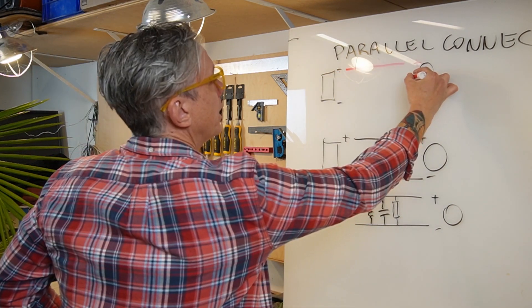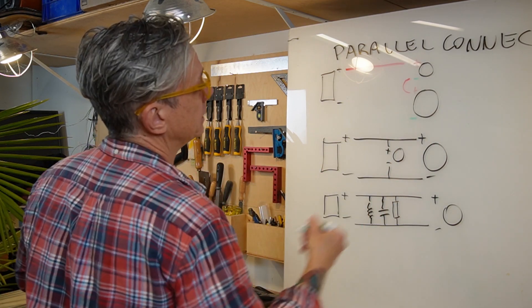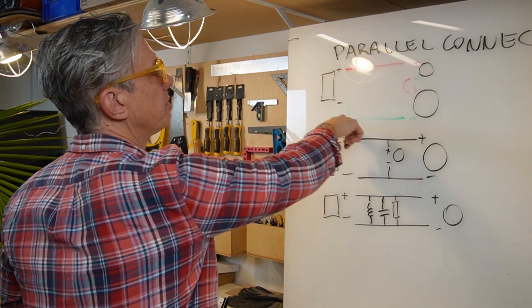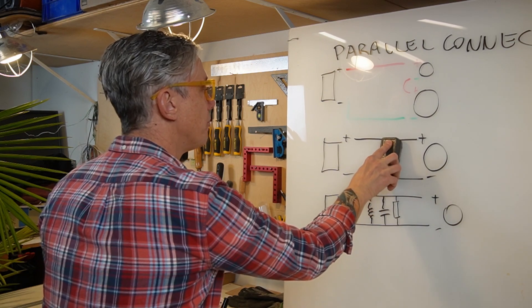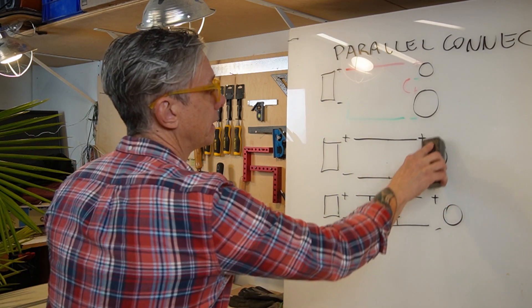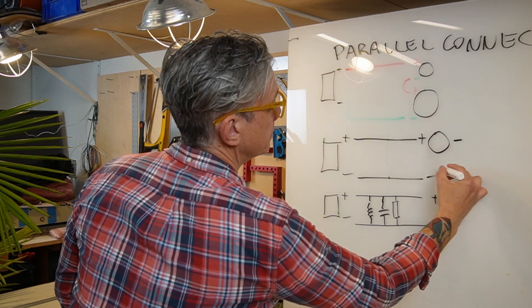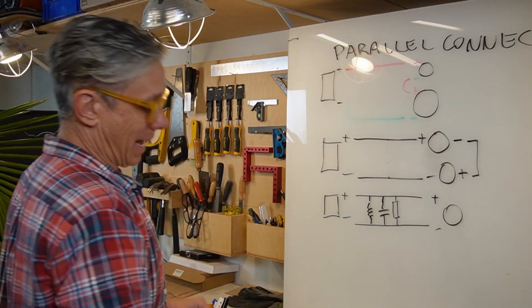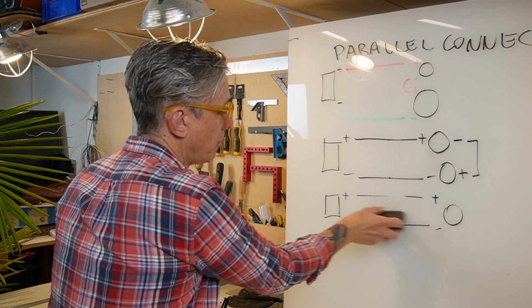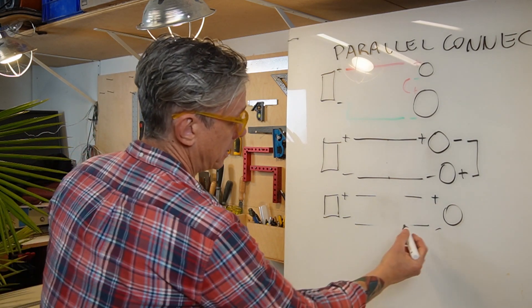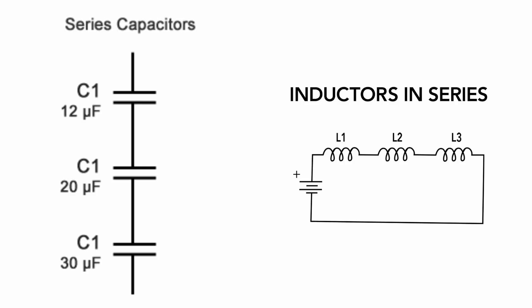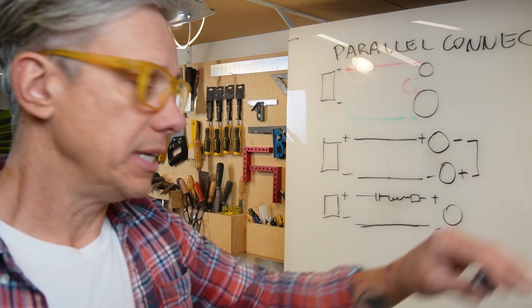In a series connection, we connect negative to positive, and the negative of the woofer goes back to the amplifier's negative — so it's kind of a loop. It goes positive to the tweeter, then negative to positive of the woofer, then negative back. We can't have those components in parallel here, so we have to add components in series to the speaker — we can add a capacitor, a coil, or a resistor, all in series.